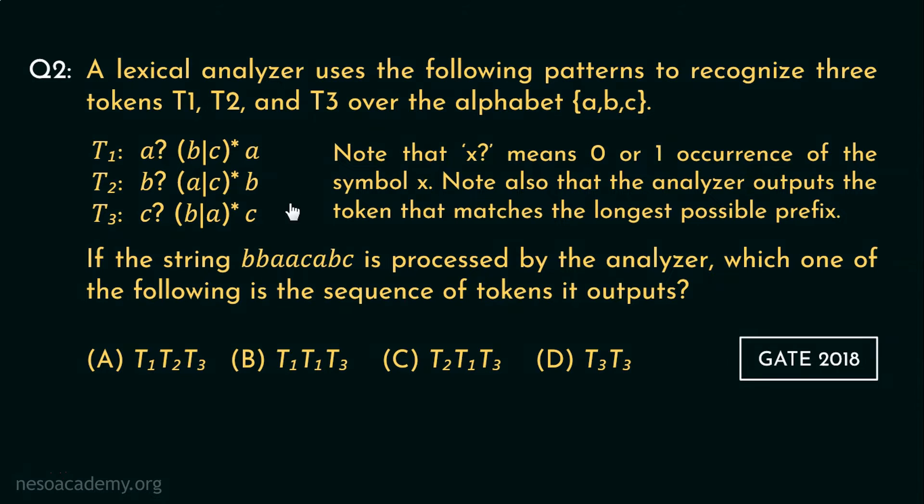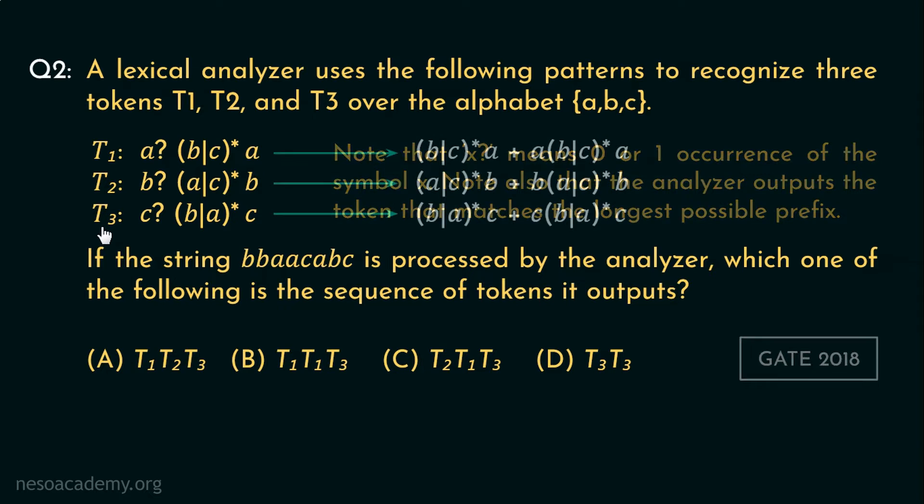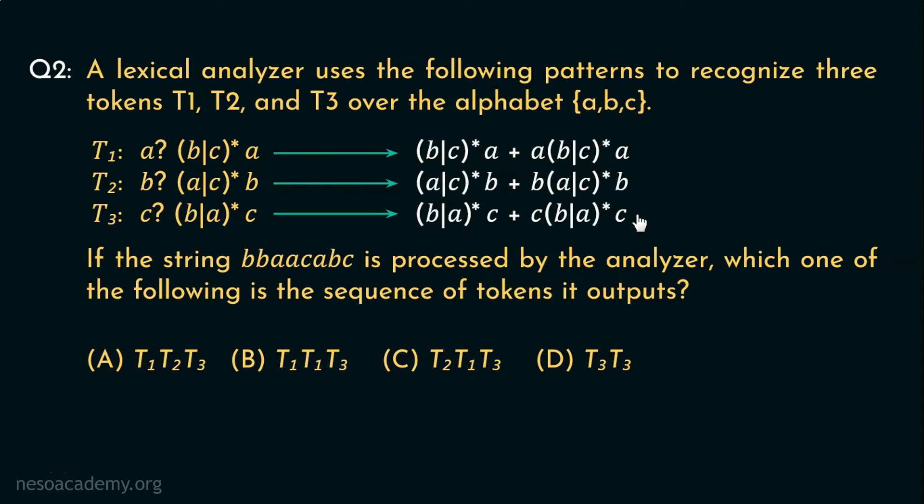Now allow me to first simplify these modified regexes for you. Remember, X followed by question mark means zero or one occurrence of the symbol X. Following this convention, T1, T2 and T3 becomes actually this. Let me explain.